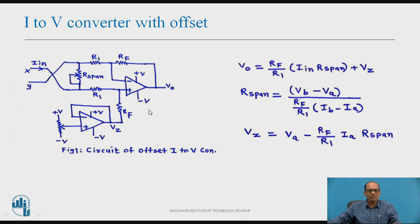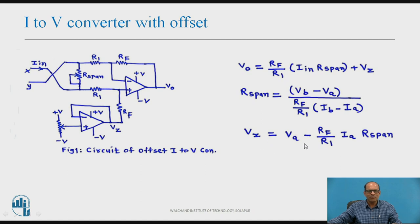The design formulae for this I-to-V converter: output voltage V-o is given by (Rf/R1) multiplied by (I-in × R-span) plus V-Z. That is, output voltage is proportional to the input current I-in plus offset V-Z. R-span is given by (V-B minus V-A) divided by (Rf/R1) × (I-B minus I-A). And V-Z is given by V-A minus (Rf/R1) × I-A × R-span. These are the design equations of I-to-V converter with offset.